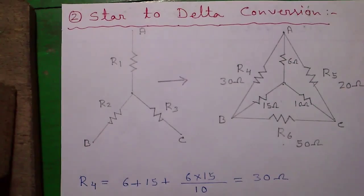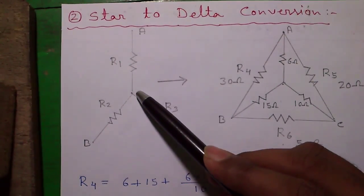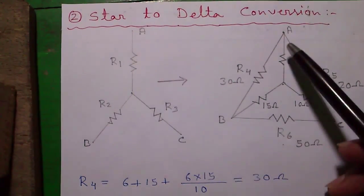Next star to delta connection. This is the star connection. We have to convert it into equivalent delta connection.